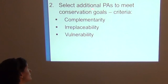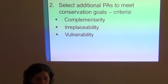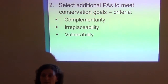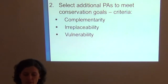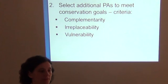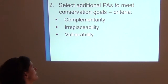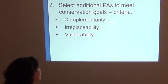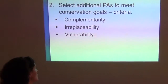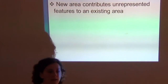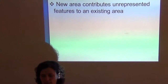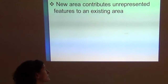To select these additional protected areas, there are three broad and major criteria used in place prioritization analysis. The first one is complementarity, the second is irreplaceability, and the third is vulnerability — and I'm going to explain them briefly in the next slide.